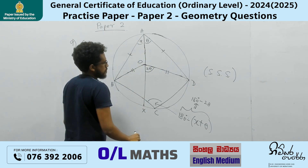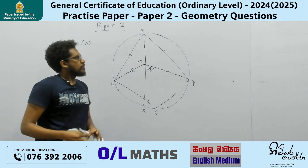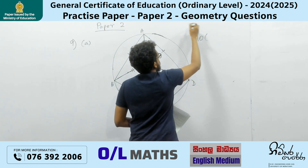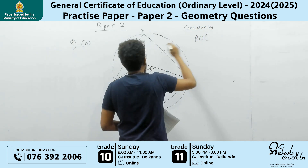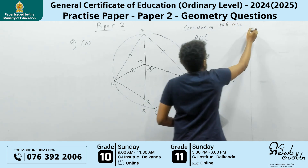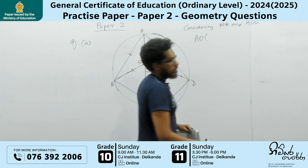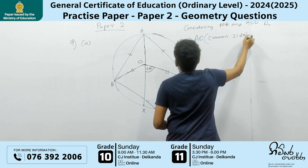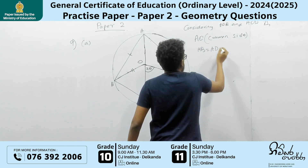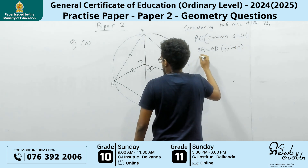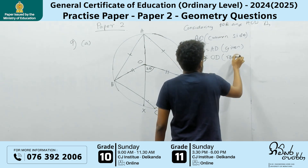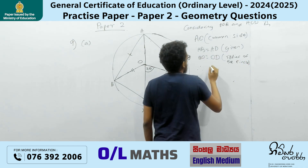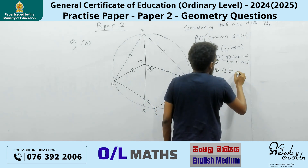So first of all, what I'm going to do is prove that these two triangles are congruent. Considering triangles AOB and AOD: AO is the common side, AB equals AD, and BO equals OD — radius of the circle. Then triangle AOB is congruent to triangle AOD.